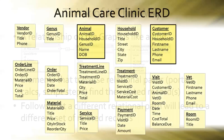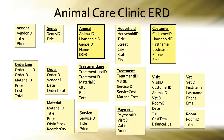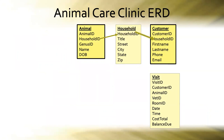In the animal care clinic solution we've been building, there are two relational paths going from animal to customer. If we traverse from animal through household to customer, we'd find all customers who live in the same household as the animal. Whereas going from animal through visit to customer, we'd find all customers who had brought that animal in for a visit — likely a different subset of customer records.